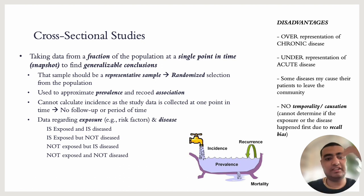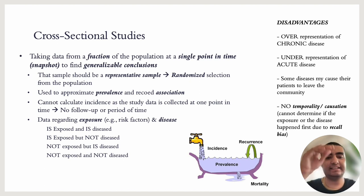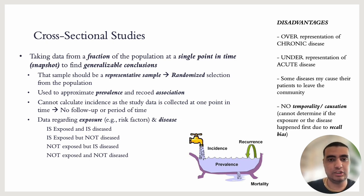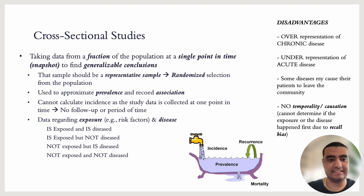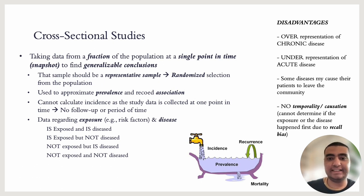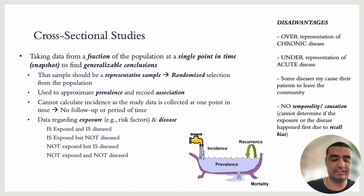Cross-sectional studies give data regarding exposure and disease. Once you collect this randomized population, you see who is exposed to the risk factor — for example, obesity and breast cancer. You divide them into four groups based on whether they have the exposure and whether they have the disease. However, this type of study has disadvantages: chronic cases have higher prevalence because they last longer and would be overrepresented, while acute cases would be underrepresented because the patient could die and you won't be able to capture them in the population.